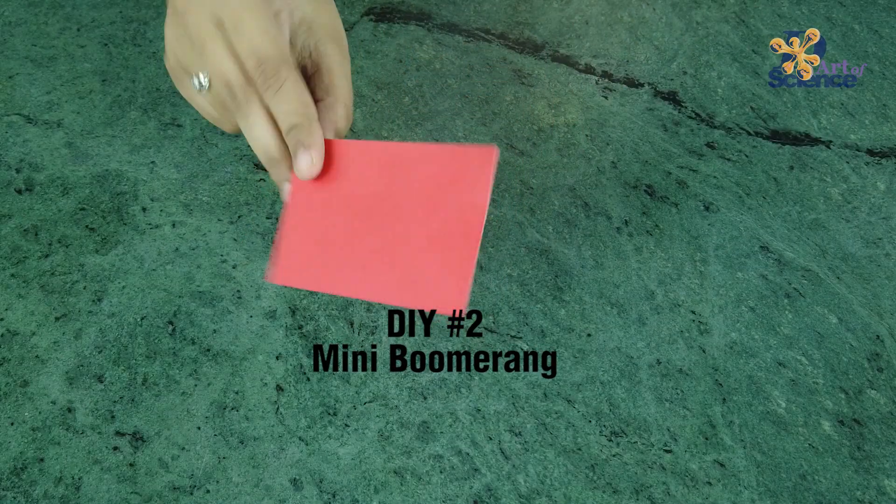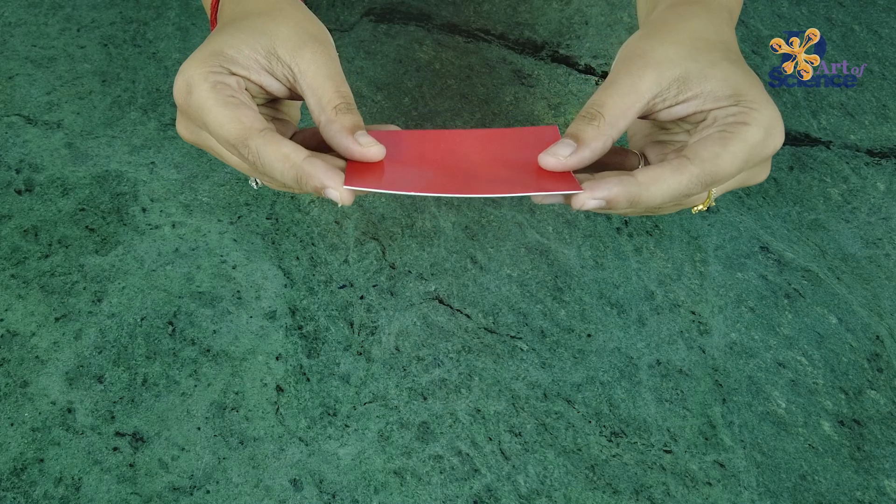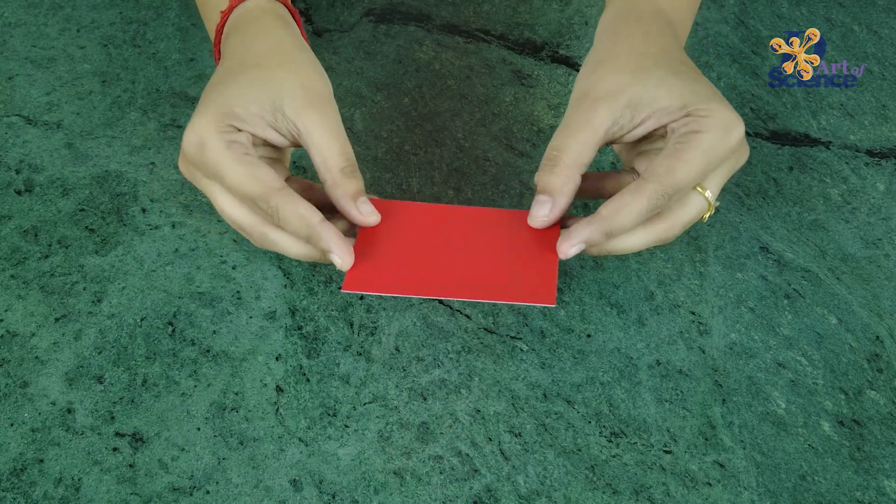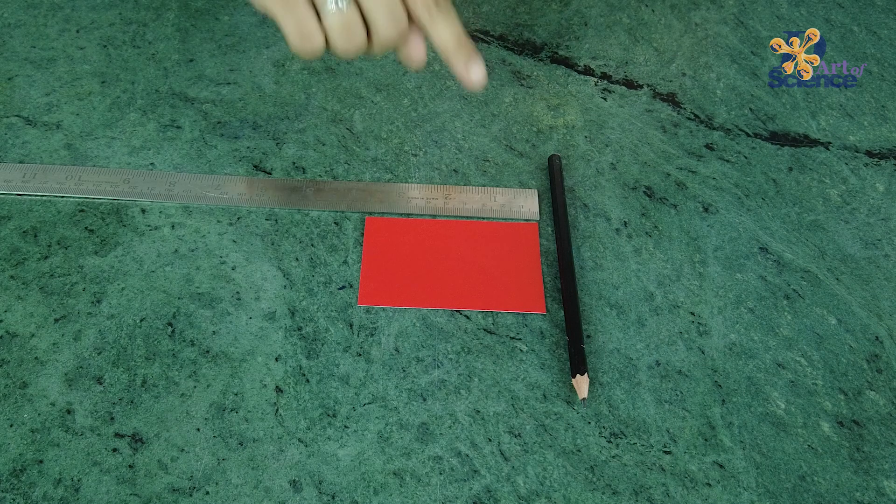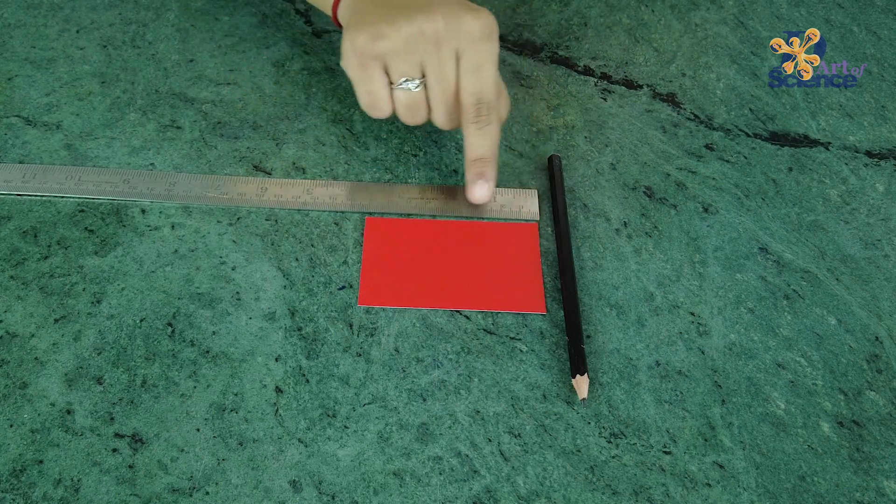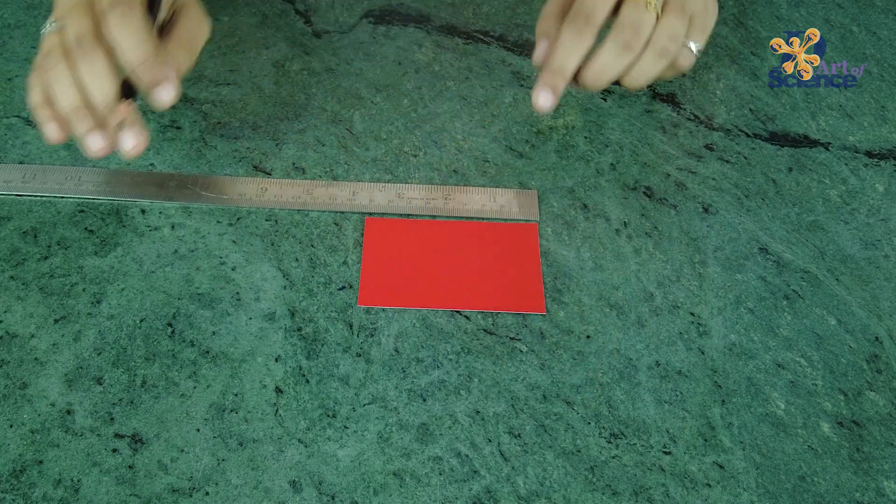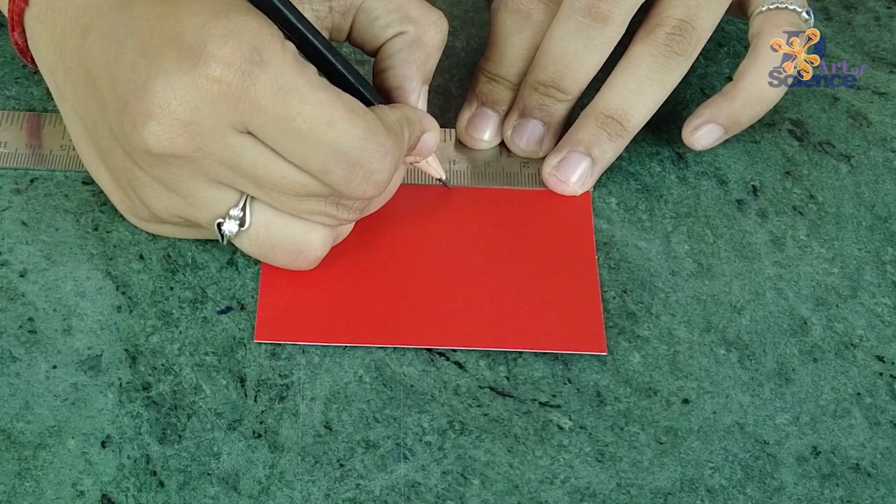For the second DIY, take a piece of cardboard. Make sure it's not too thick or too thin. Next, use one of the corners that is in a right angle and mark four centimeter length on both sides.